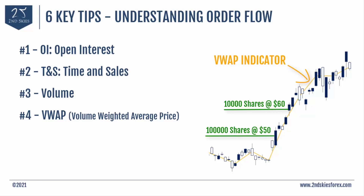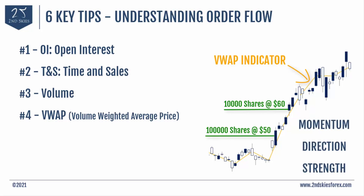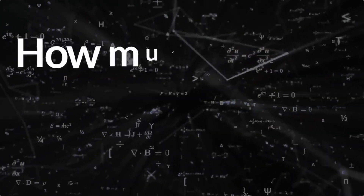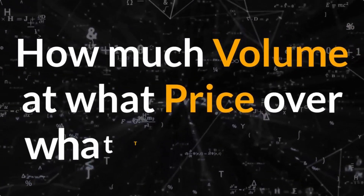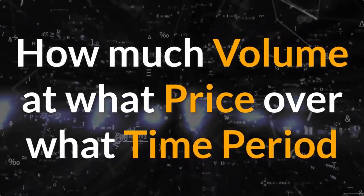This is giving you an insight into how the buying and selling is manifesting in terms of strength, direction, and momentum in the price action at any one price. And this is what the volume weighted average price indicator gives you — it's telling you how much volume is coming in at this price over this particular period.